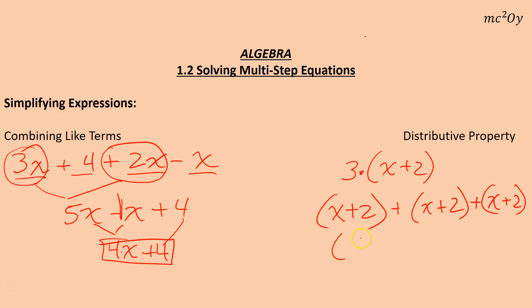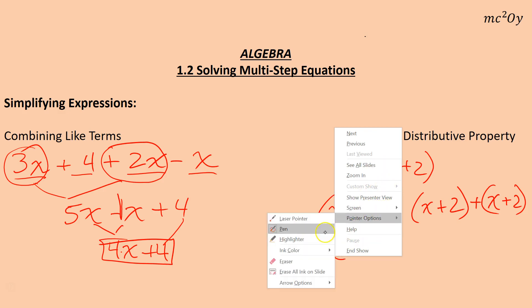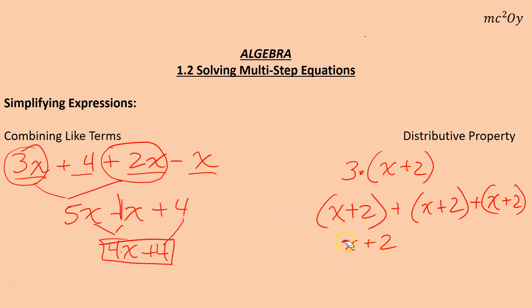Remember, multiplication right here just means repeated addition. It means you have 3 of these being added up. Now, really the parentheses don't mean anything. So I have x plus 2, and let me get rid of that parenthesis there. And then plus another x plus 2 since the parentheses don't mean anything.